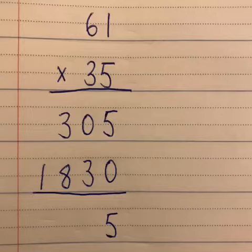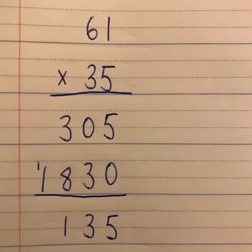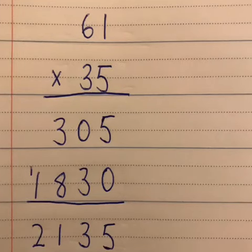The next step in long multiplication is to add the two products together. So we worked out that 5 lots of 61 was 305 and 30 lots of 61 was 1830. Now we need to add those two products together. So to start with, 5 plus 0 makes 5. 3 plus 0 makes 3. 8 plus 3 makes 11. Drop down the 1, carry the 1 over to the thousands column. And 1 plus 1 makes 2.